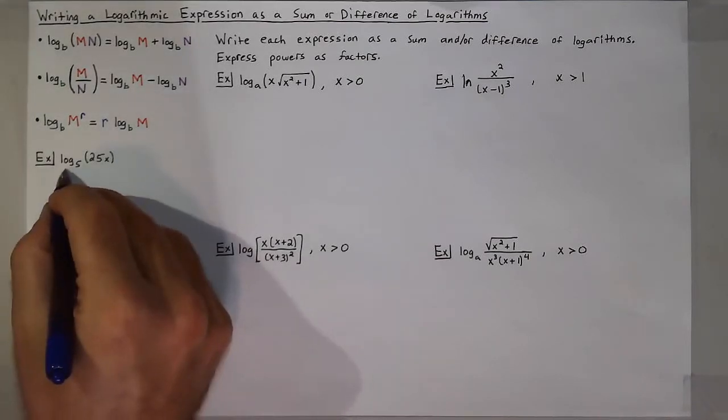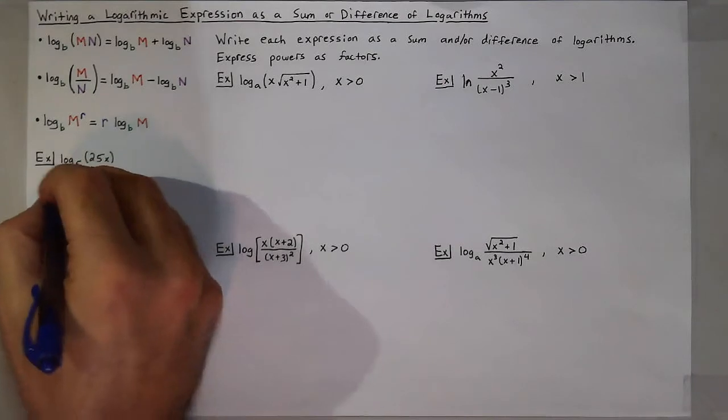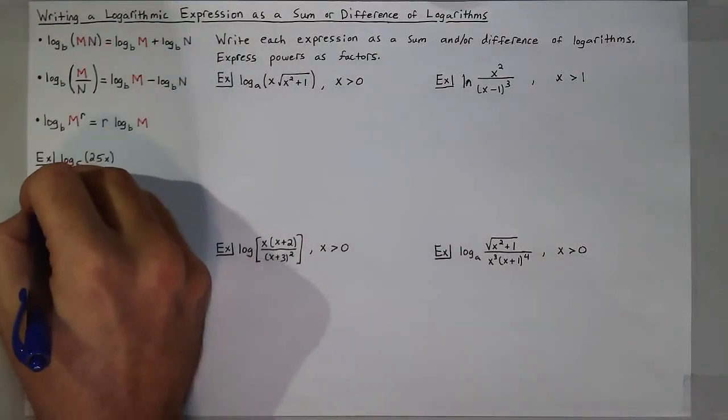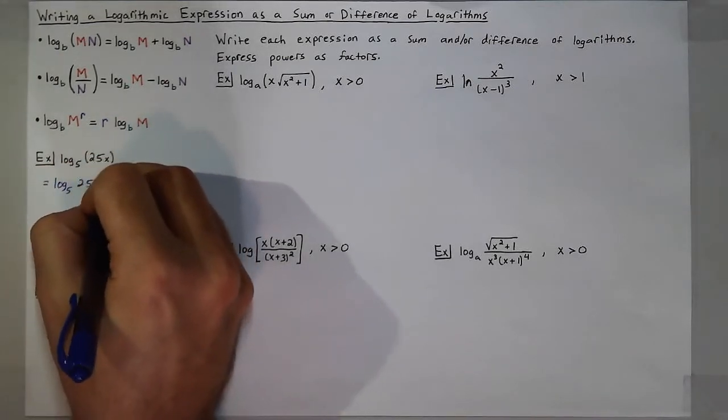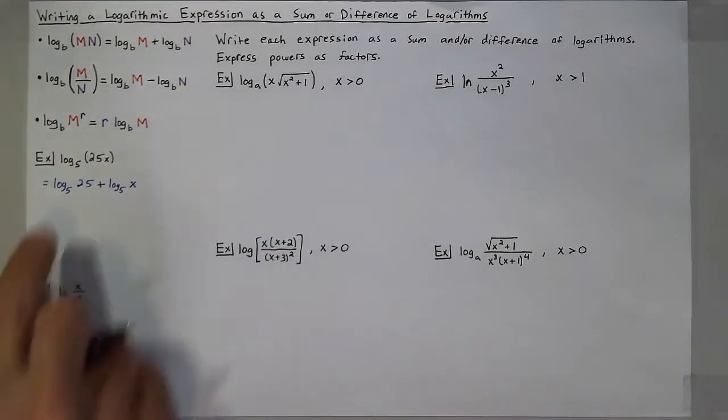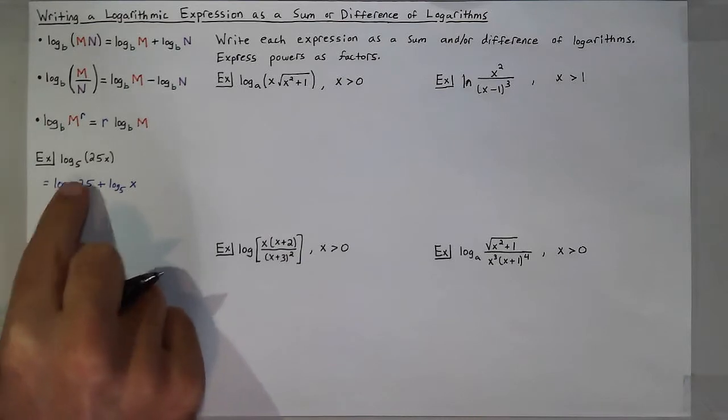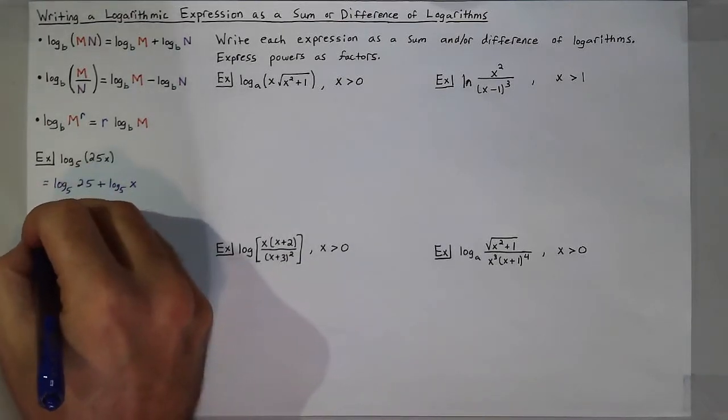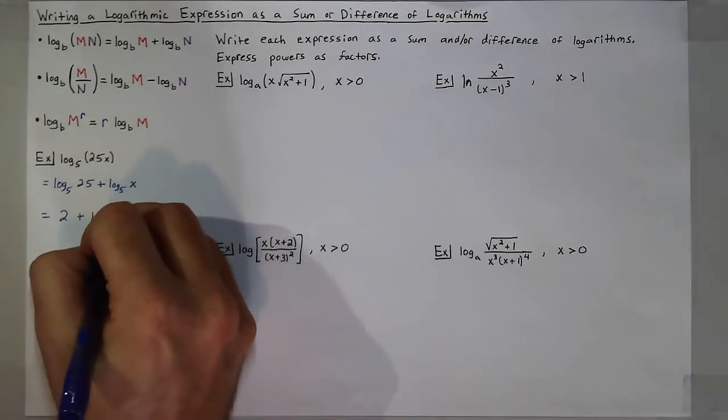So if I have log base 5 of 25x, then I can write this, since they're being multiplied 25 times x, as log base 5 of 25 plus log base 5 of x. Now log base 5 of 25, the power you raise 5 to to get 25 is 2, so log base 5 of 25 is 2. So my expression becomes 2 plus log base 5 of x.